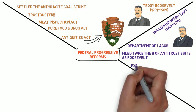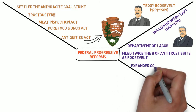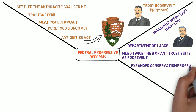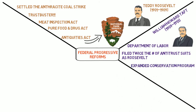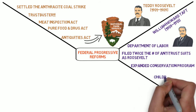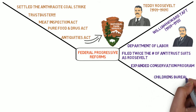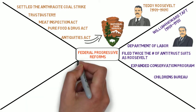Taft also expanded environmental conservation efforts begun under Roosevelt. And in 1912, Taft created the Children's Bureau to promote and protect the welfare of America's children. The Children's Bureau oversaw the conditions in orphanages and tried to reduce the practice of child labor.